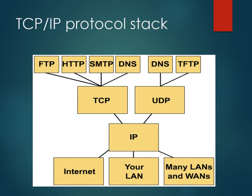We can understand the TCP/IP protocol with the help of a diagram. The first layer is the Network Access layer, which includes LAN (Local Area Network) and WAN (Wide Area Network). The second layer works with IP, the Internet Protocol. At the third layer — the Transport layer — we use two protocols: TCP (Transmission Control Protocol) and UDP (User Datagram Protocol).